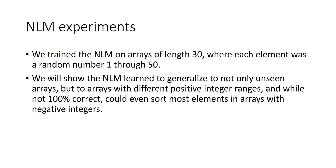In the experiments I'm going to show here, we trained the NLM on arrays of length 30. Right now it's handling fixed-size arrays, and the goal is to sort those elements. The random numbers are 1 through 50 — so we have an array with 30 elements where each index can take some number between 1 and 50. We'll show that the NLM learned to generalize not only to unseen arrays, but to arrays with different positive integer values it was not trained on. It could even sort most elements in arrays with negative integers, even though it was not trained on them.